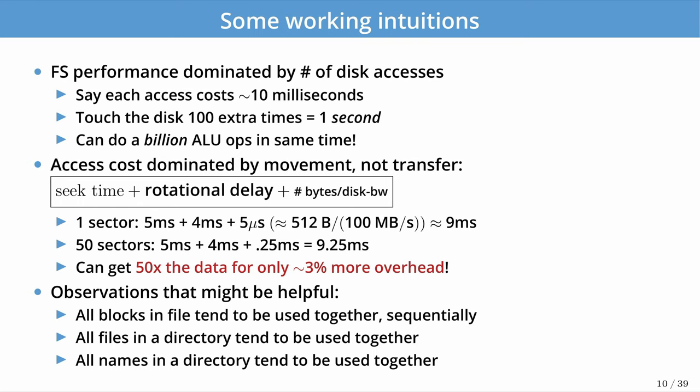Some workloads read random sectors while others are more sequential. We'd like to identify sequential workloads and read more data at once when possible. This assumes that we read 50 sectors contiguously on disk laid out physically one after another, which requires the file system to place blocks contiguously on disk.